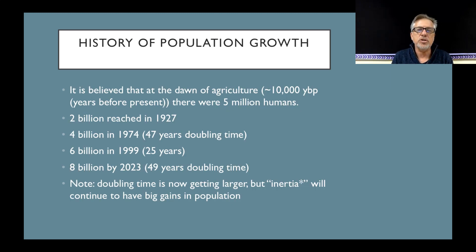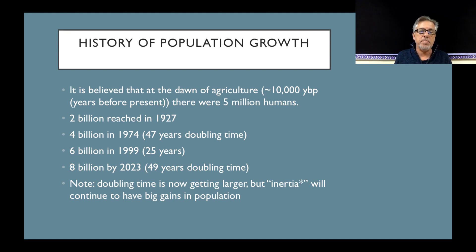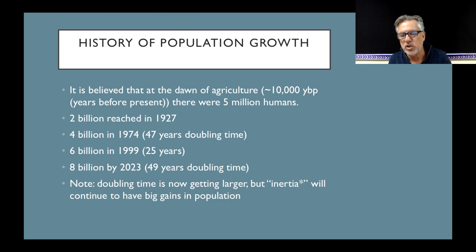It's believed that at the dawn of agriculture, about 10,000 years before present, there were about 5 million human beings on Earth. By 1927, we reached 2 billion, and in 47 years that doubled to 4 billion in 1974. We got another 2 billion people added in 25 years, and 8 billion is predicted in 2023, showing that the doubling time is increasing slightly from 47 to 49 years. The inertia of our population size means we continue to have big gains in population even if fertility goes down, which it is showing signs of doing.